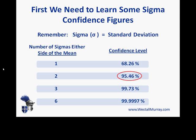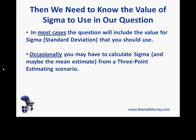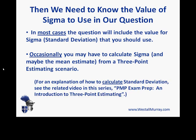In our example we're talking about 95%, and the closest value is two sigma. To answer exam questions you also need to know the actual value of sigma — not just how many sigmas, but what sigma is numerically. In most questions you will be given that value directly. In some cases, however, you might need to calculate sigma, and also the mean estimate, from a three-point estimating scenario. A reminder that there's another video called 'PMP Exam Prep: An Introduction to Three-Point Estimating' to help with that.